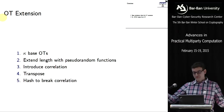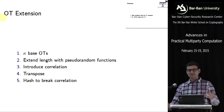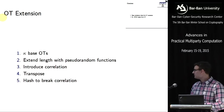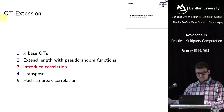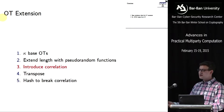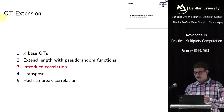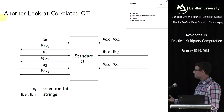This is the so-called transposition step, and then in the end you hash to break the correlation and also break the correlation with your original OTs. The critical step from the point of view of malicious security is the correlation step, because then the party who's supposed to introduce the correlation could just cheat by not doing it properly, and what I mean by that we will see in a minute.